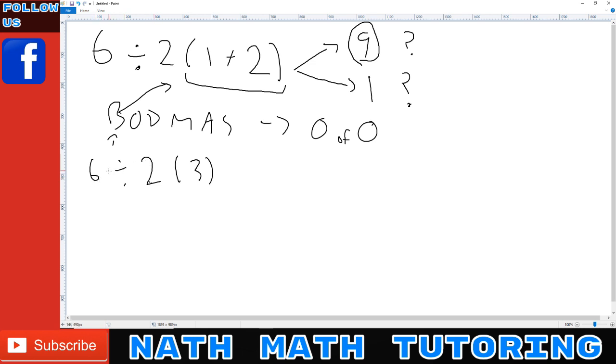But what's happening here is you're dividing by 2, and then you're multiplying by 3. So this is actually the same as 6 divided by 2 times 3.